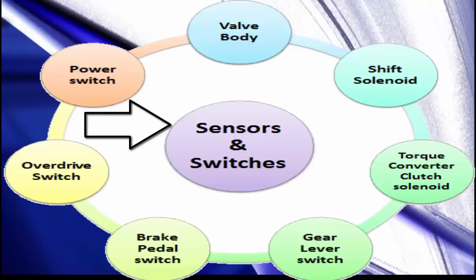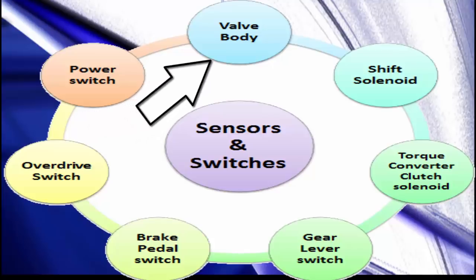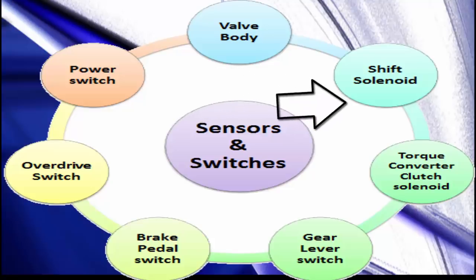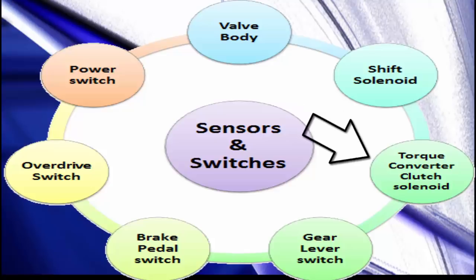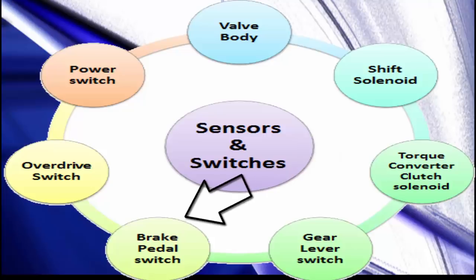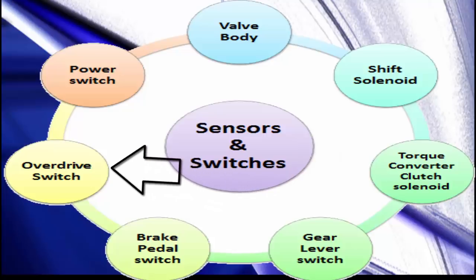Let's know about the sensors and switches linked through the transmission control module. First, valve body. Second, shift solenoid. Third, torque converter clutch solenoid. Fourth, gear lever switch. Fifth, brake pedal switch. Sixth, overdrive switch. Seventh, power switch.